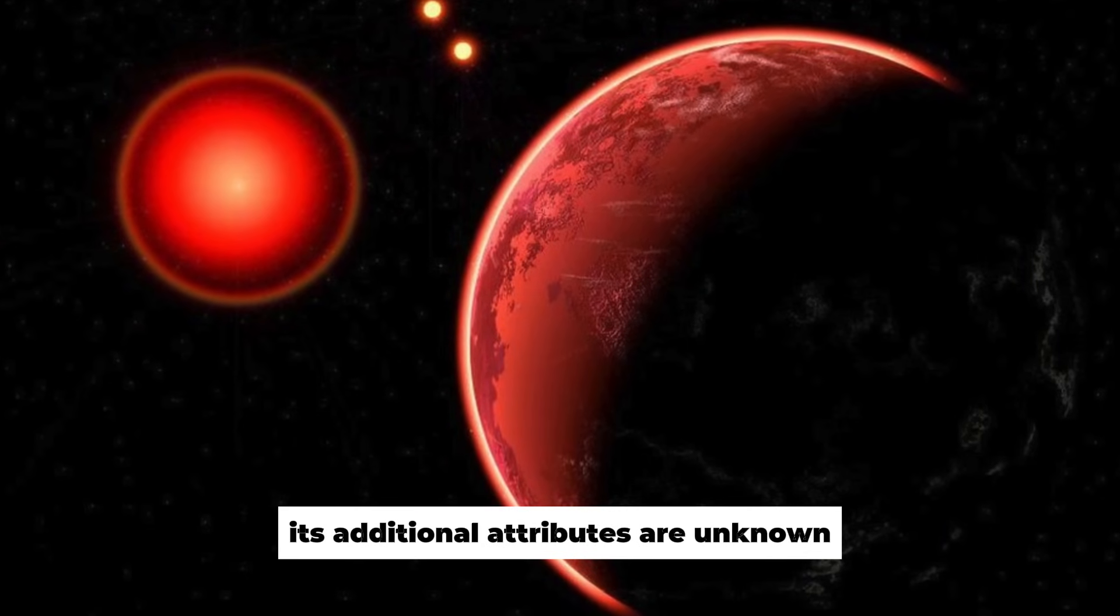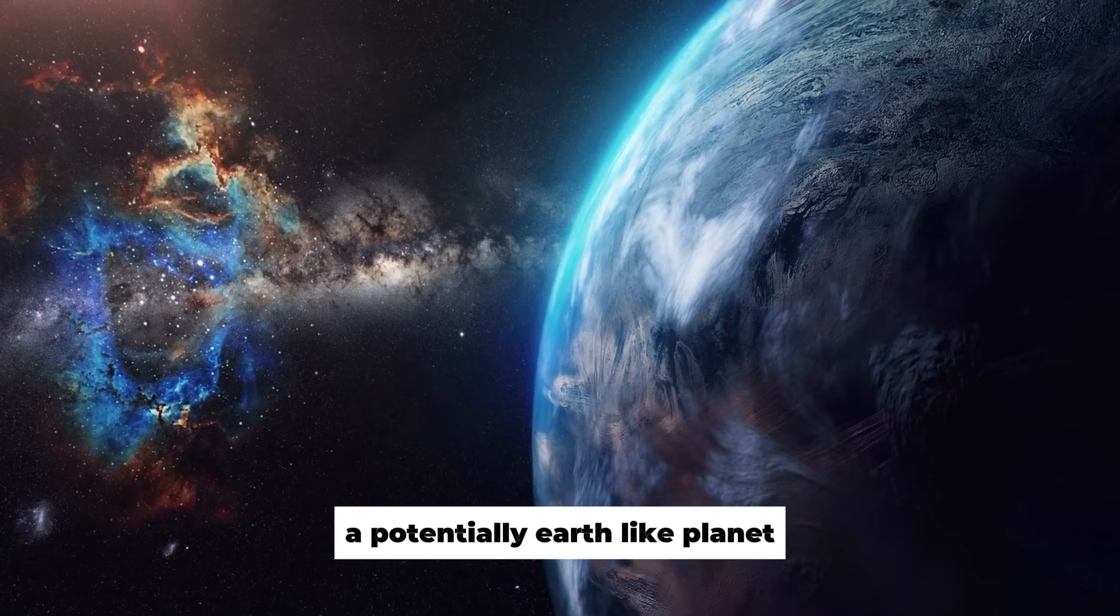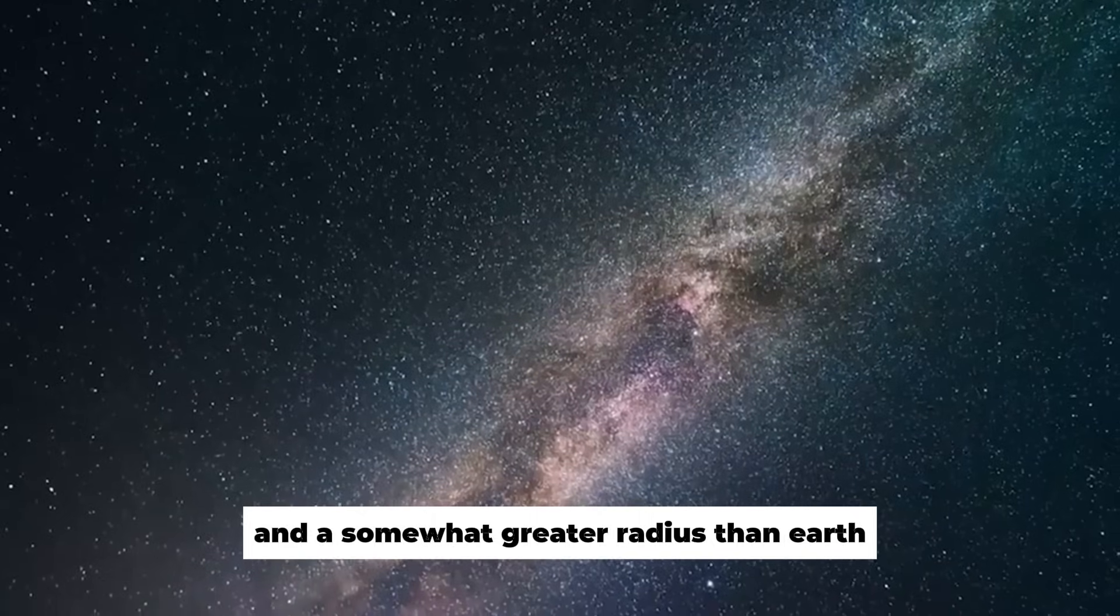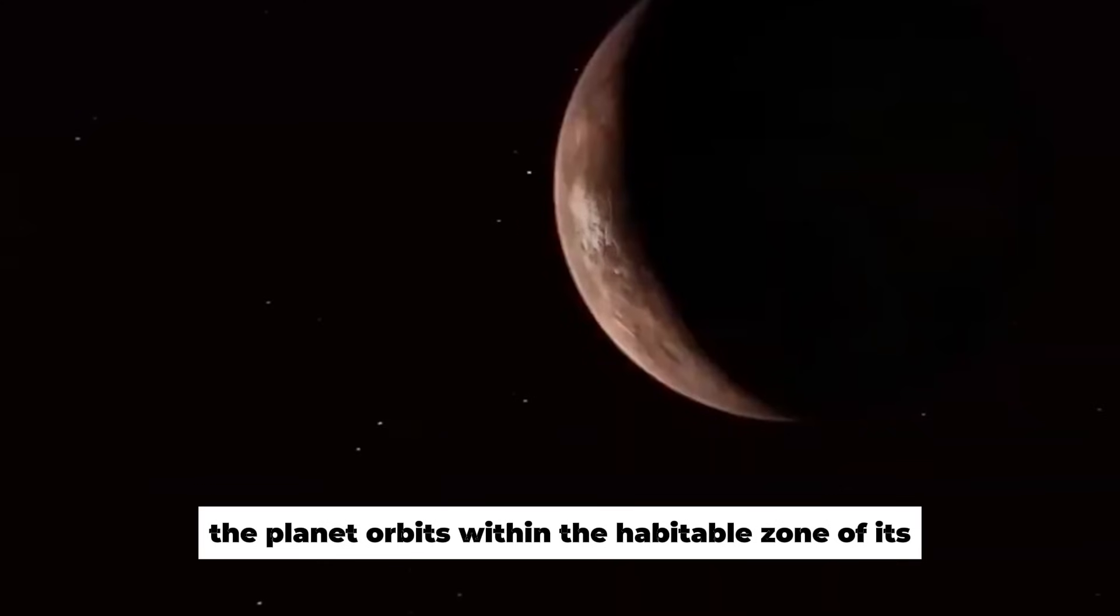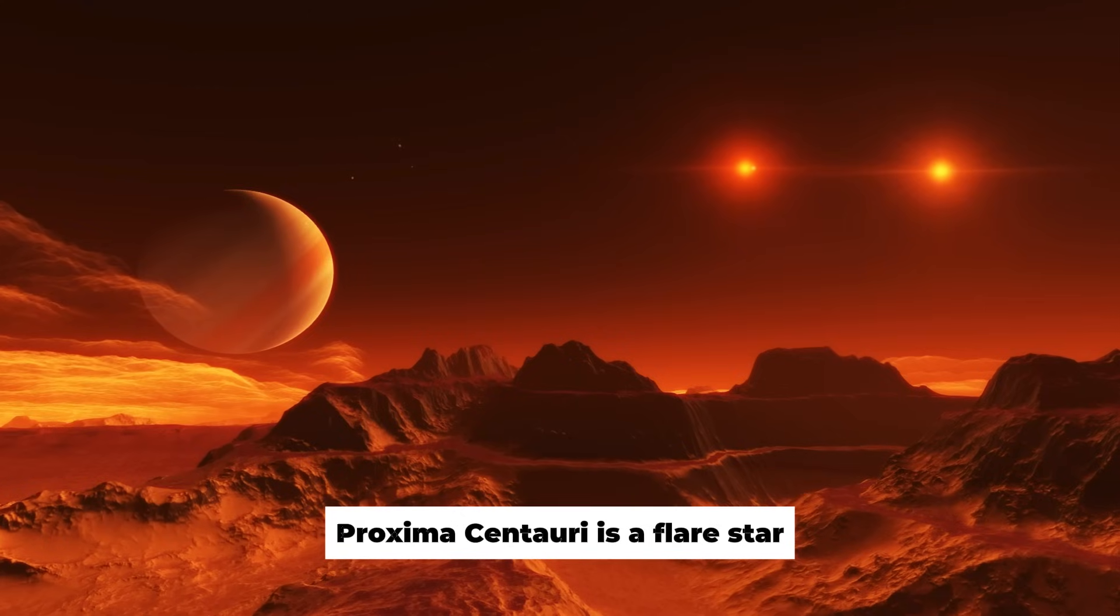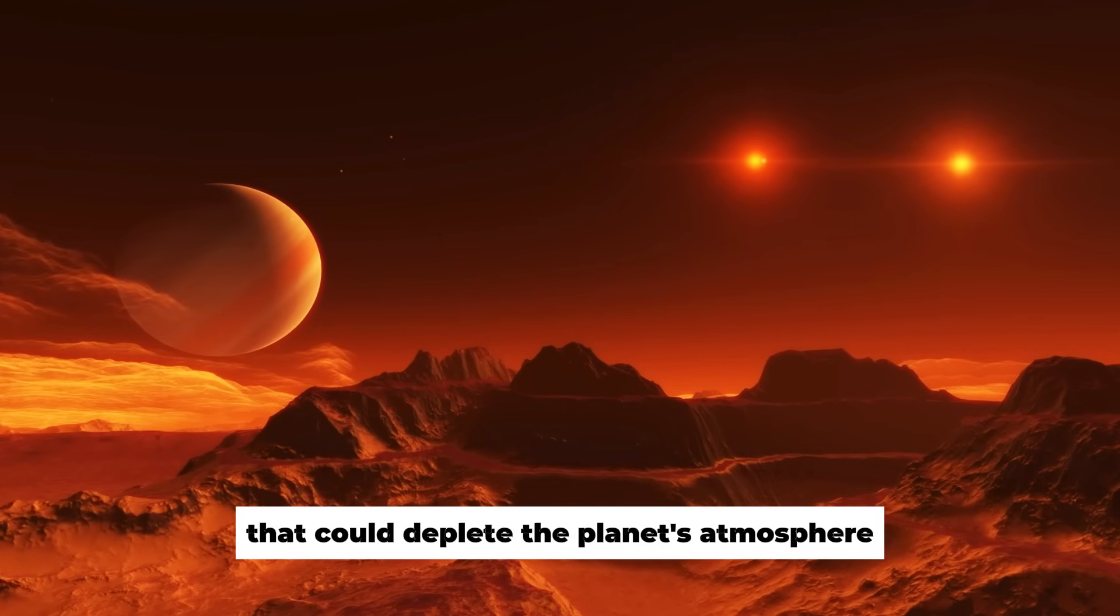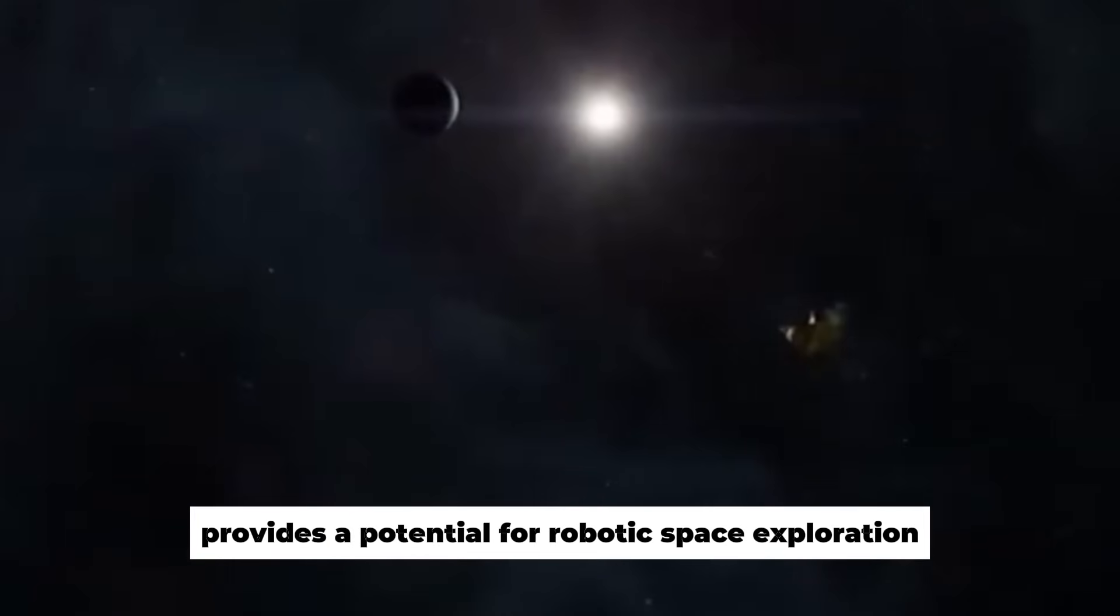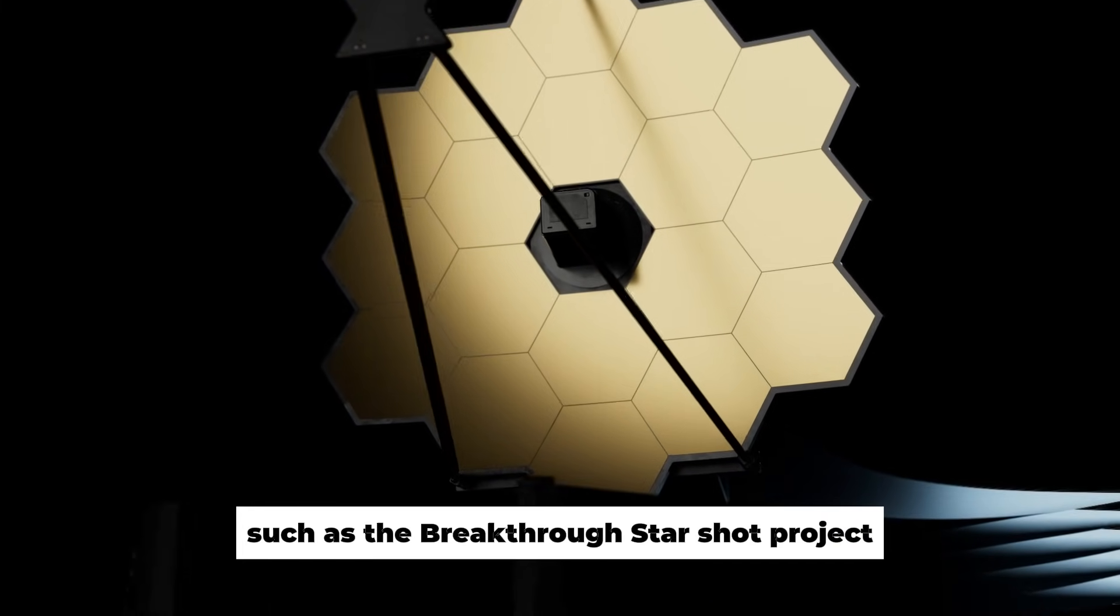Its additional attributes are unknown, although it is thought to be a potentially Earth-like planet with a minimum mass of at least 1.07 and a somewhat greater radius than Earth. The planet orbits within the habitable zone of its parent star, but its atmosphere is unknown. Proxima Centauri is a flare star with powerful electromagnetic radiation emissions that could deplete the planet's atmosphere. The planet's close vicinity to Earth provides a potential for robotic space exploration, such as the breakthrough Starshot project.